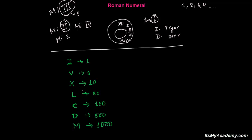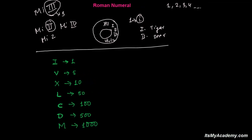So these seven symbols you must have to learn. Once you learn these seven symbols, then you are going to master this Roman numeral system — you can easily understand it. It's very simple if you know this. You learn it by writing three, four, or five times, or any time you write, or just by reading — anyhow you try to learn this.